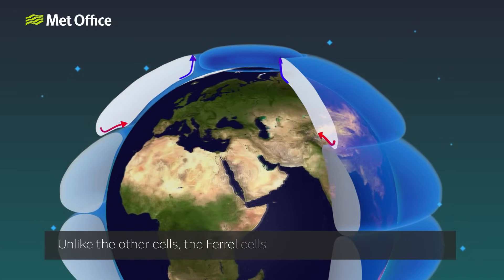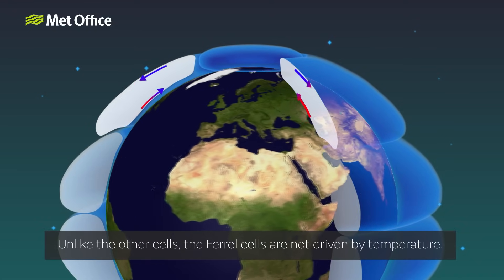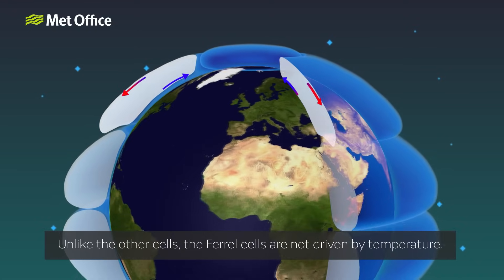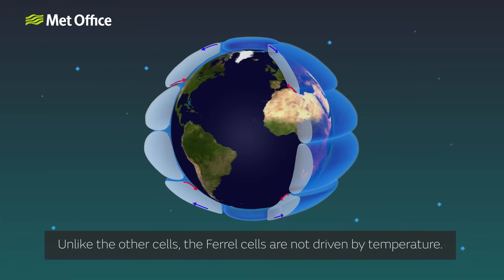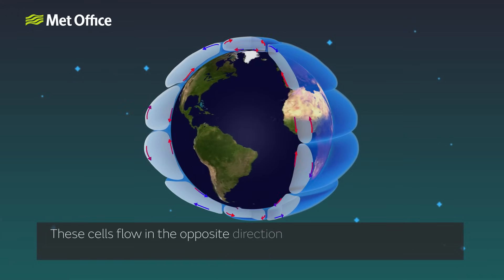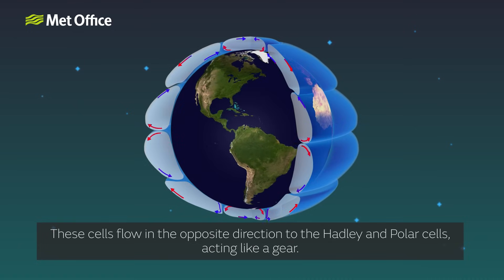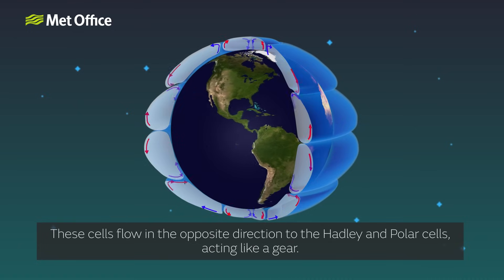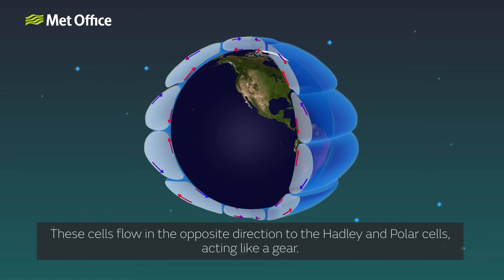Unlike the other cells, the Ferrel cells are not driven by temperature. These cells flow in the opposite direction to the Hadley and polar cells, acting like a gear.